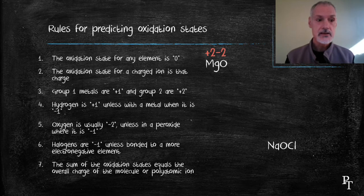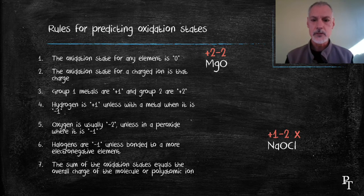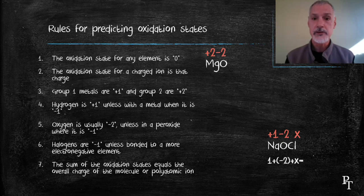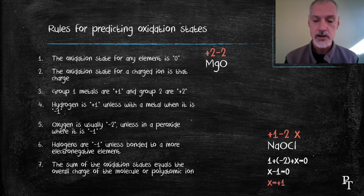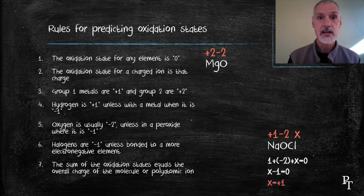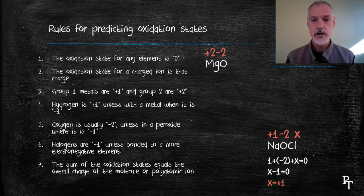Sodium hypochlorite. Again, I can consult the rules. I can see that sodium is plus one, oxygen minus two. I can't apply rule number six, though, because chlorine is hooked up with oxygen, so its state is unknown. So I'm going to set up an algebraic expression and make it equal to zero, because this molecule doesn't have a charge. As a result, I can find out that chlorine has a plus one oxidation state in this molecule.